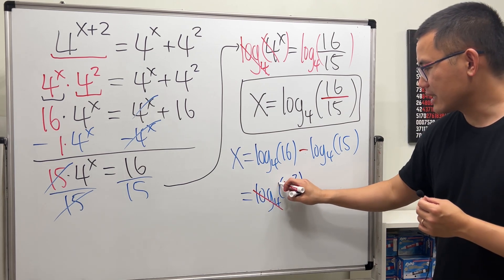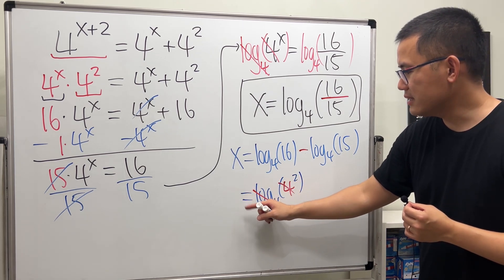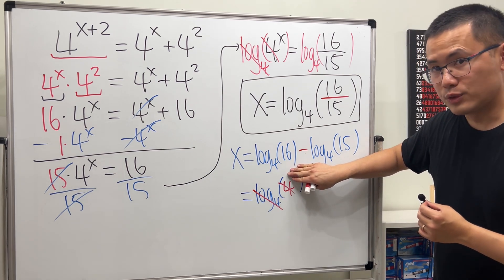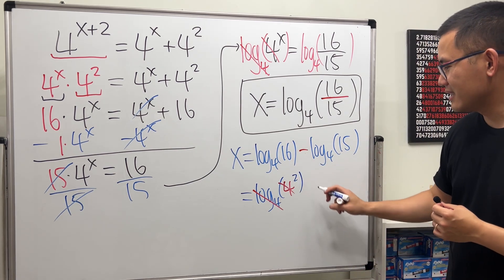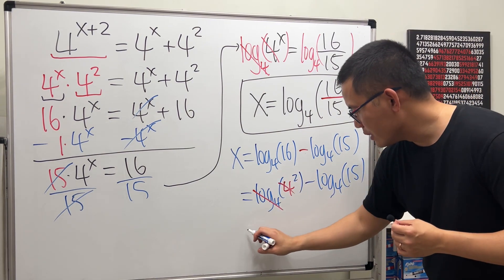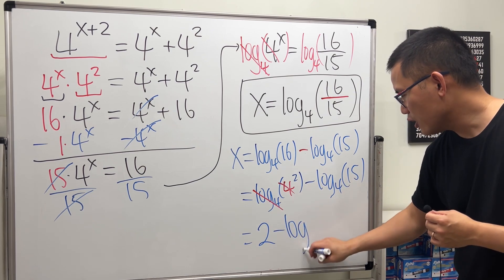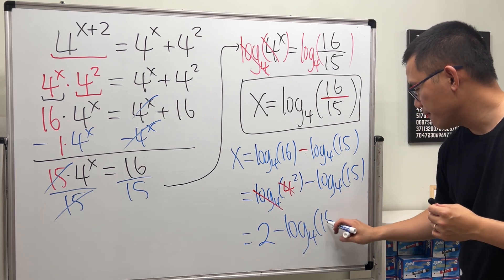Because this way, this and that can cancel. Or another way to look at it is you can put a 2 to the front, and log base 4 of 4 is 1, so it depends how you want to look at it. So all in all, this is just a 2, and then minus log base 4 of 15.